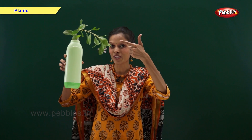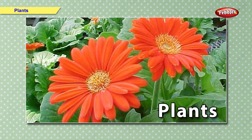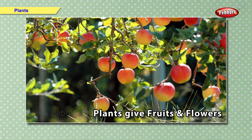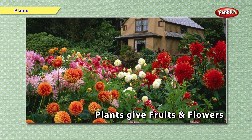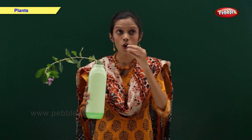Friends, today we are going to learn about plants. We see many types of plants around us. Plants are very useful to us. They give us food, fruits, vegetables and flowers. Plants keep the air cool and fresh. They also make the surroundings look beautiful. Plants need water, air and sunlight to grow. Plants can make their own food with the help of sunlight.